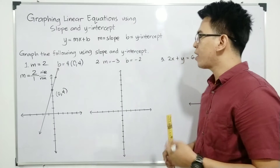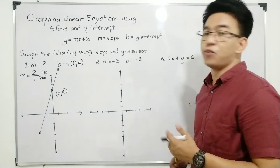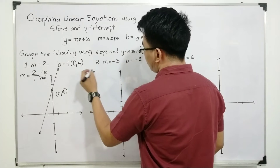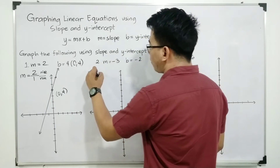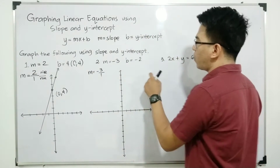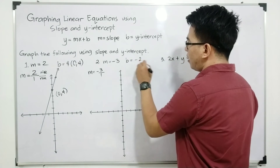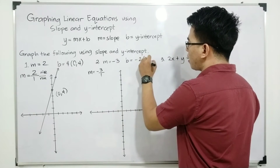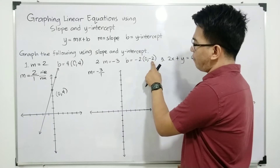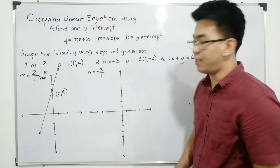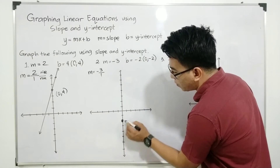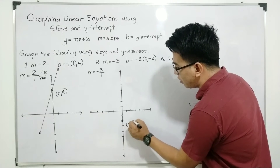Let's move on with item number 2. We are given negative 3 as the slope and negative 2 as the y-intercept. We recall that the slope is also equal to rise over run, wherein negative 3 can be represented as negative 3 over 1. As for the y-intercept, this is negative 2 — the coordinates are (0, negative 2). We will start with the y-intercept. Since this is negative, it is along the lower part of the y-axis: negative 1 and negative 2. We have (0, negative 2).